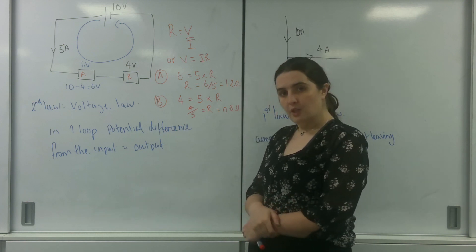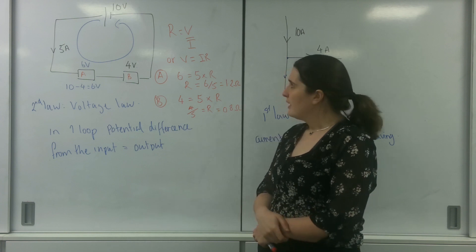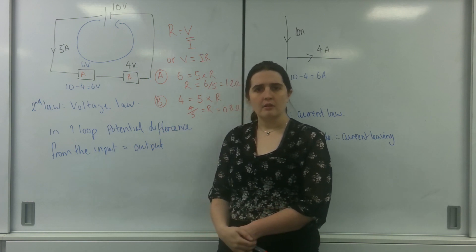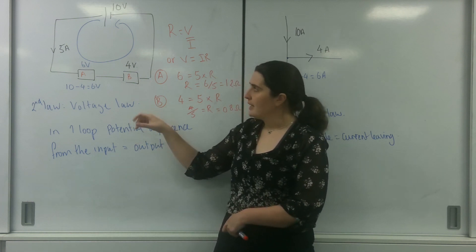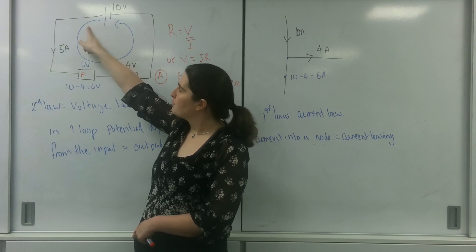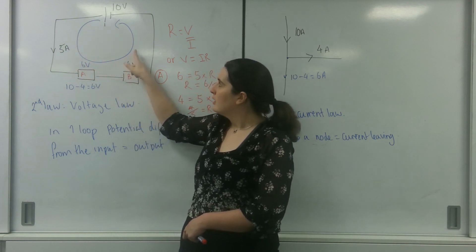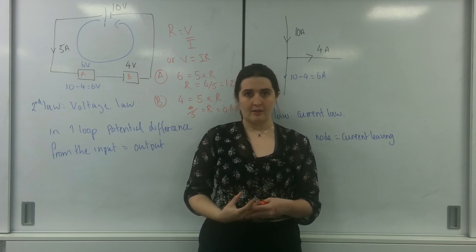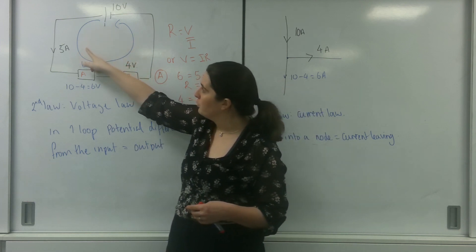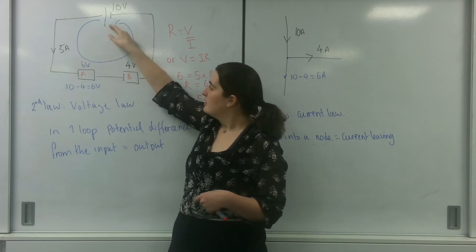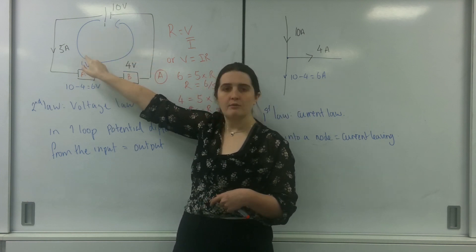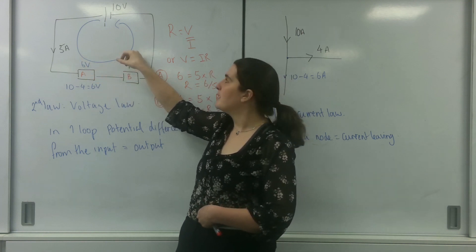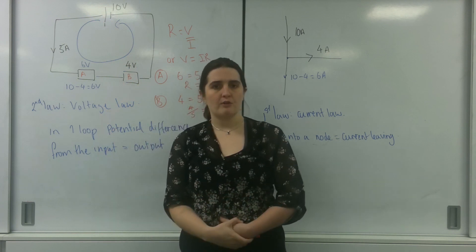An important thing to note, and it's a mistake that's commonly come up, is that students feel that each one of these should get the same voltage. They don't. Kirchhoff's voltage law states, as the electron goes round, or as the charged particle goes round, it must come back to the cell with no potential left. So it must have lost its potential on its loop. So here it loses 6 volts worth of potential, and here it will lose 4 volts worth of potential, meaning it comes back to the cell with 0 potential.